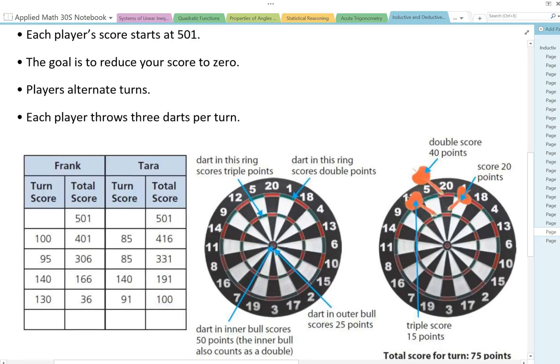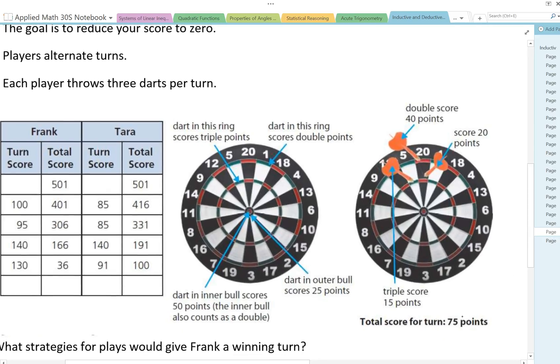So if you look here total score for turn 75 points, how did they get that? Well this is in the 20 but because they scored on the outer ring they got double points so that's 40 and then this one is only 20.